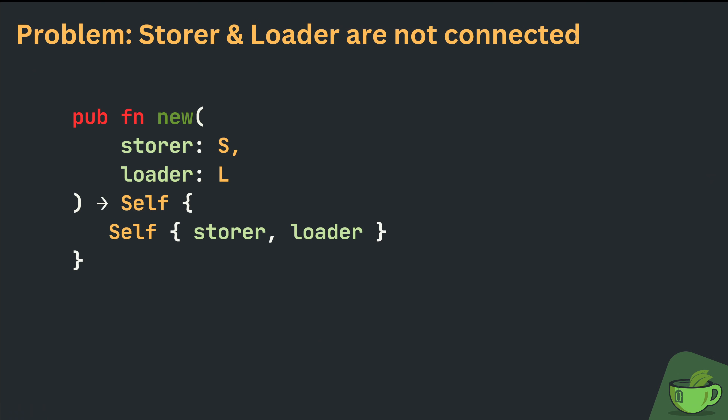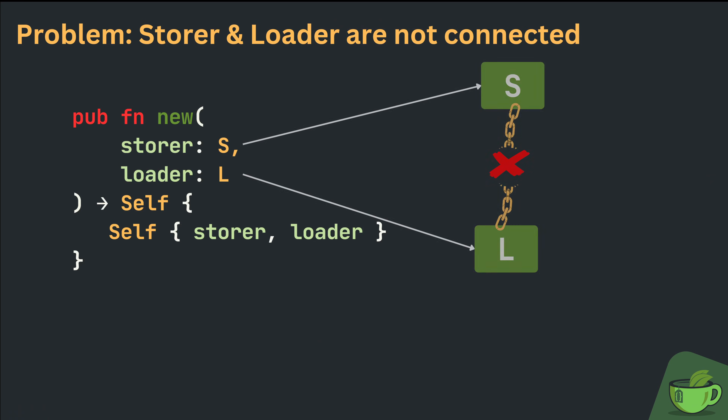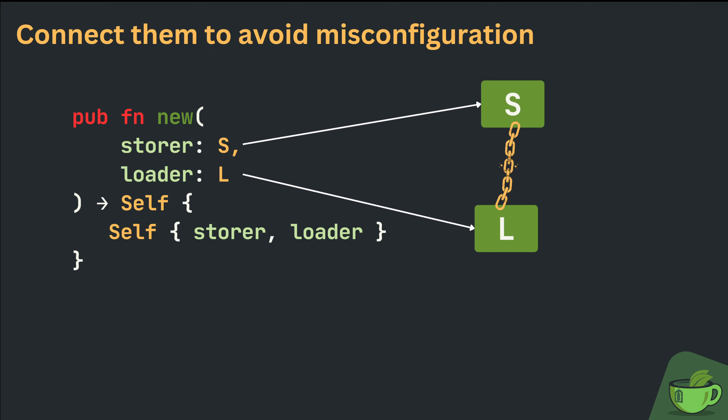Let's take a look at what it is, how to use it, and how it can solve this very problem. The point where the misconfiguration can happen is our constructor method. It takes two separate objects, a Storer and a Loader. The crux is that the types of the Storer and the Loader are not connected at all. This is what allows us to use a JSON Storer together with a SQL Loader.